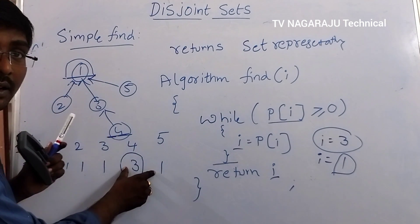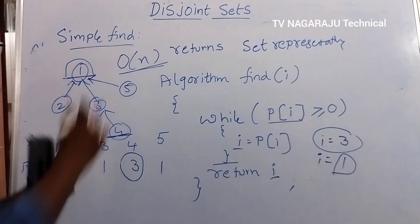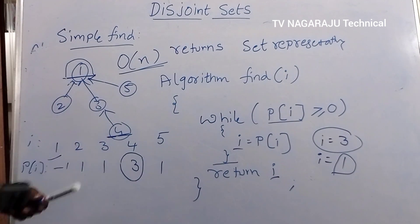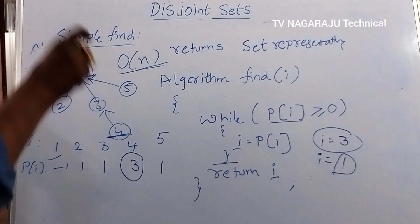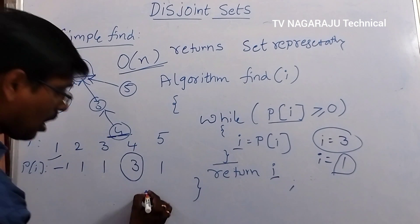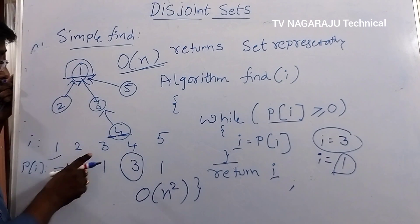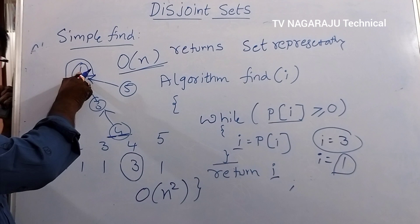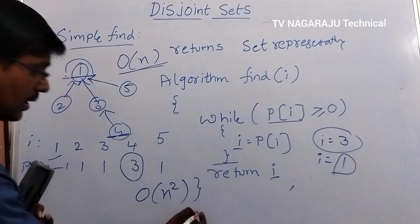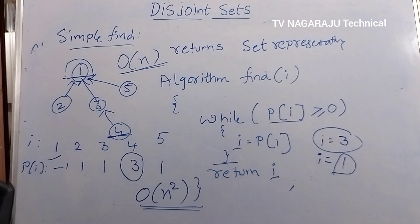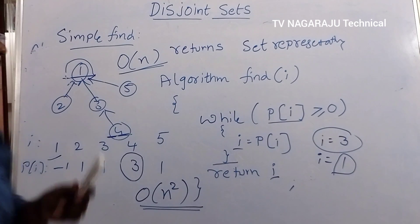The time complexity of find mainly depends on the height of the tree. If the height is equal to n, the time complexity is O(n). Since the find operation is repeated n times — find(4), find(3), find(2), find(1), and so on — and each individual find is O(n) in the worst case, the overall time complexity is O(n²).